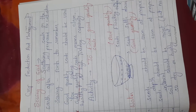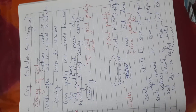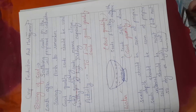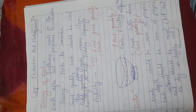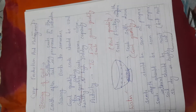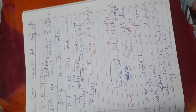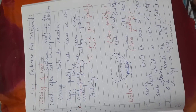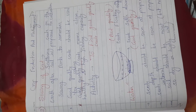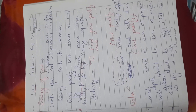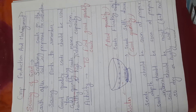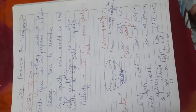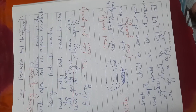High yielding variety means that in a small piece of land the production or yield will be more. Here one activity is given which you may perform at home. For this activity, you have to take one bowl and half fill it with water, and after that you have to put some seeds — maybe some gram seeds or moong seeds — and leave it for some time.